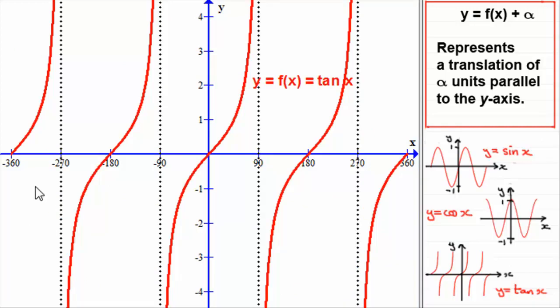Now, you should be familiar with this graph. It's got asymptotes at minus 270, minus 90, 90 degrees, and 270 degrees. Now, what I'd like you to do is to see if you could just sketch one more graph, and that one would be y equals f of x plus two. So, we've got tan x plus two. Again, you might like to pause the video and come back in a few moments and check your answer.